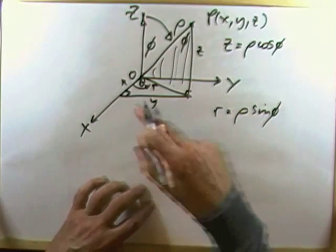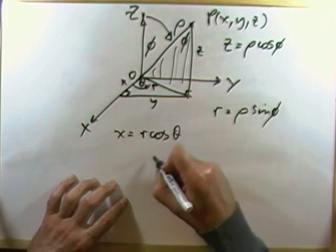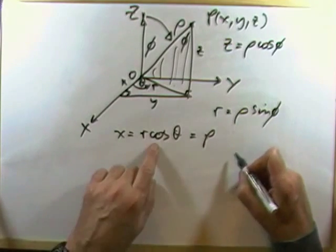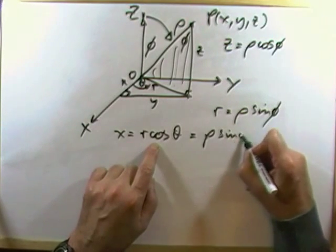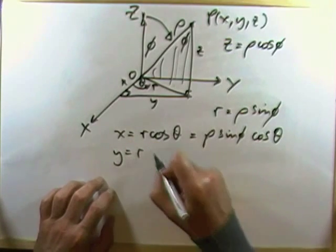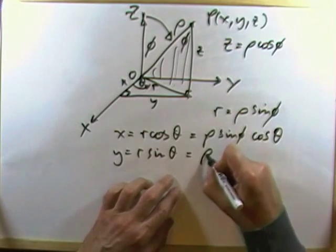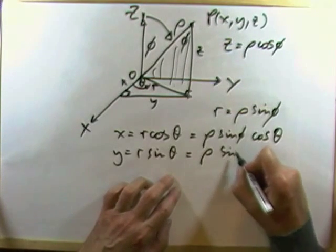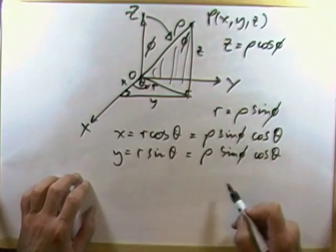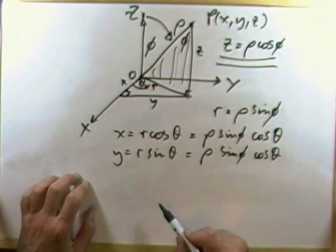And from that, I can get my x and y, because I know that x equals r cos theta. So x is then going to equal rho times sin phi times cos theta. And I know y equals r sin theta. So it's going to equal rho sin phi sin theta. Giving the three coordinates, the z coordinate, the x coordinate and the y coordinate.